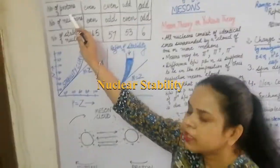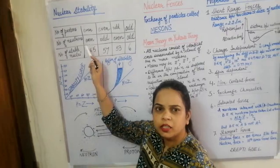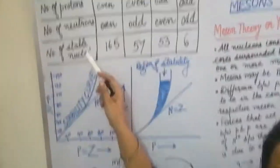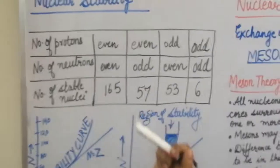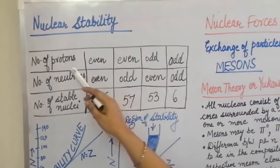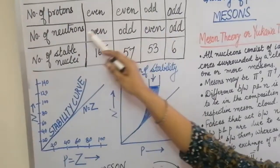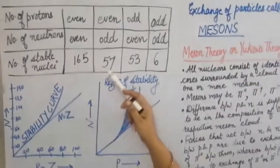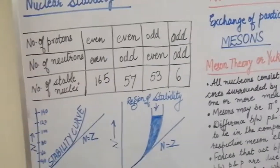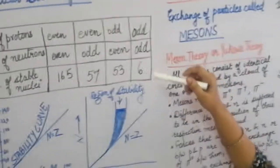It has been found with various experiments that those nuclei in which the number of protons are even or the number of neutrons are even are stable. There are 165 stable nuclei for even-even proton and neutron number. If protons are even and neutrons are odd, or protons are odd and neutrons are even, the stable nuclei are found to be 57 and 53 respectively. Where the number of protons and neutrons are both odd, there are only 6 stable nuclei.